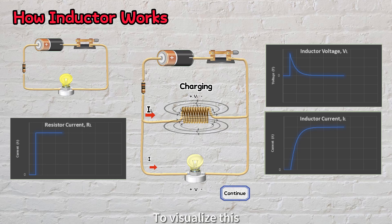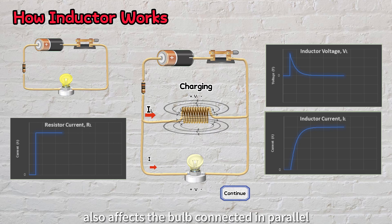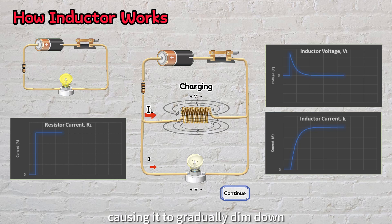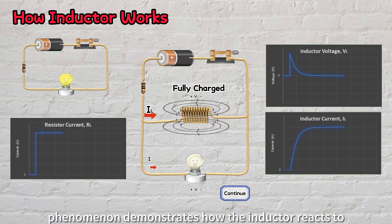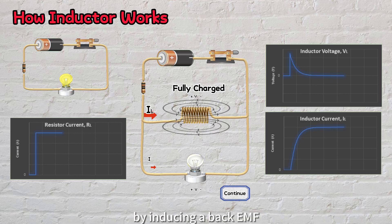To visualize this, the reduction in voltage across the inductor also affects the bulb connected in parallel. The lower voltage means less current flows through the bulb, causing it to gradually dim down. This phenomenon demonstrates how the inductor reacts to changes in current by inducing a back-EMF.